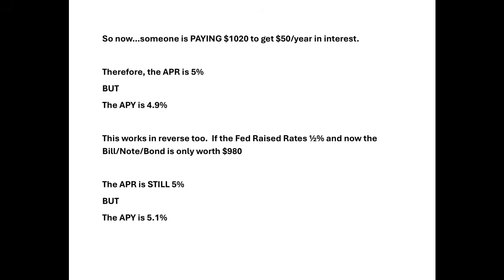Are you seeing why there's a bond market? Now, this works in reverse as well. If the Fed raised rates a half a point — 50 basis points — the bond is now only worth $980. If you need money, say your transmission went in your car and you need to sell your bond, you'd take a $20 loss. I buy it from you for $980. The payment I'm going to get is still $50, because 5% of $1,000. However, my yield is now 5.1%, because it's $50 divided by $980.